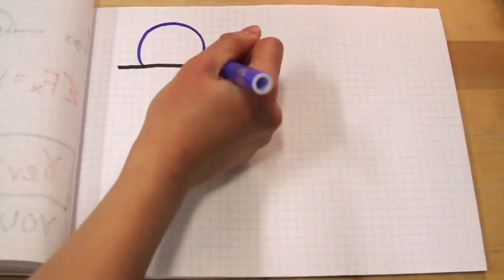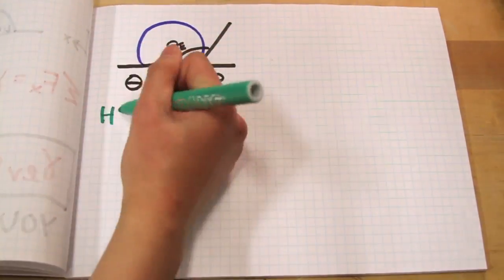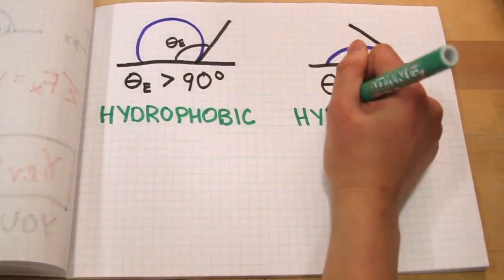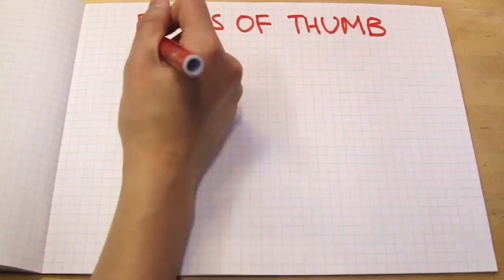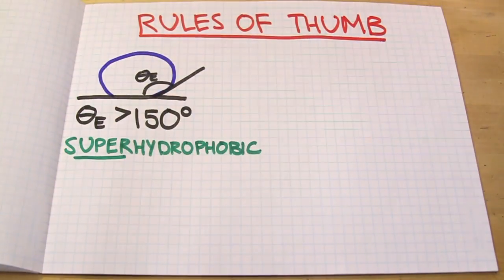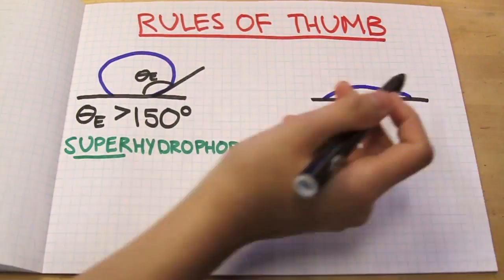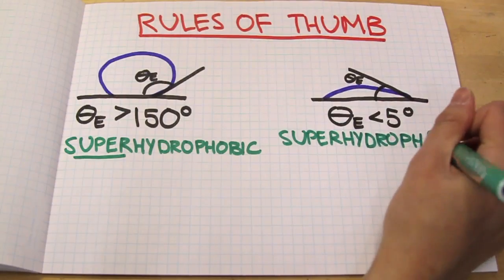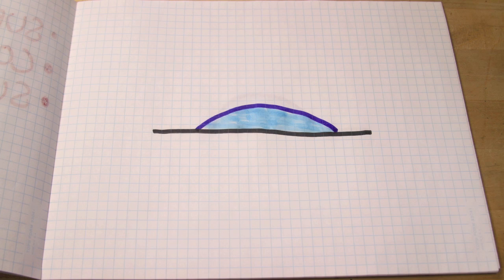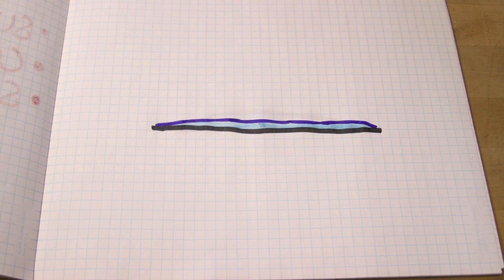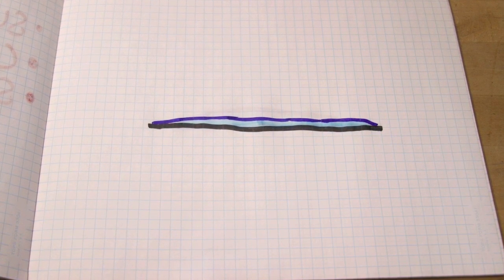If the equilibrium contact angle is greater than 90 degrees, the surface is hydrophobic. If the contact angle is less than 90 degrees, the surface is hydrophilic. If the contact angle is greater than 150 degrees, the surface is defined as superhydrophobic, and water droplets will ball up. If the contact angle is less than 5 degrees, the surface is superhydrophilic, and water droplets will spread out completely — this is useful for anti-fog coatings, where water forms a thin film instead of droplets.